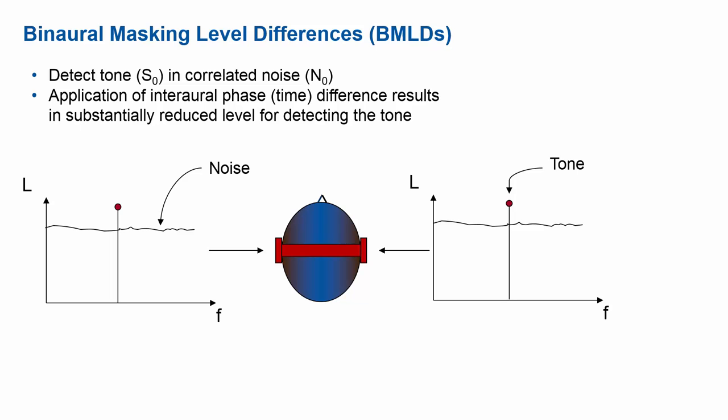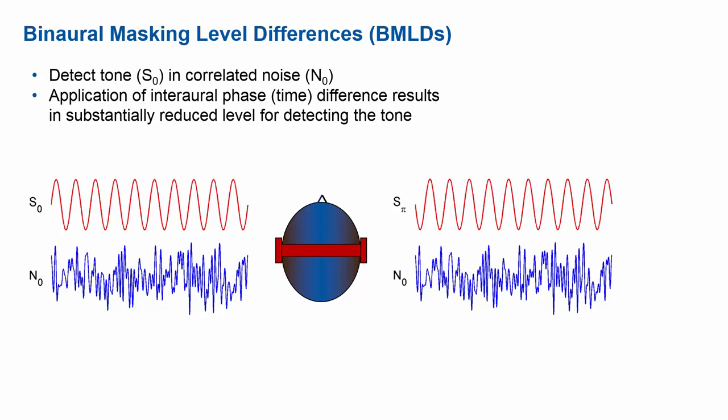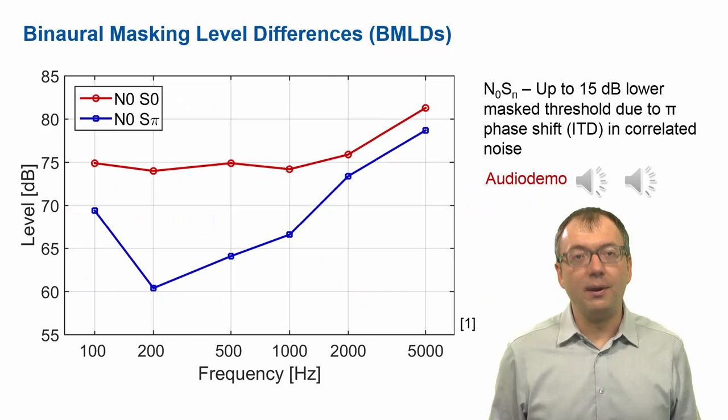The interesting part happens when we give different signals to each ear rather than the same signal — which is what we call the N0 or S0 condition. Instead, if we change the signals across the ears so that the tone is phase-inverted on one ear — so 180 degrees phase shift in the signal — but keep the noise the same on both ears, and then contrast that with the standard condition where both ears receive identical signals, thresholds change massively.